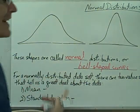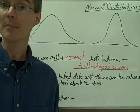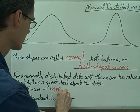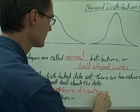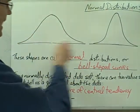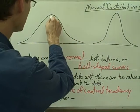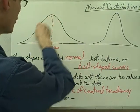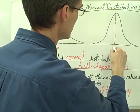For any normally distributed data set, there are two values that will tell us a great deal about the data set. One of these we've already talked about — the mean, which is a measure of central tendency. For a normally distributed data set, when we draw the normal curve, the mean is this point right here in the center.